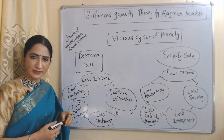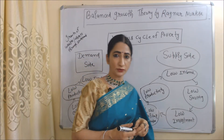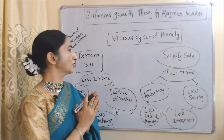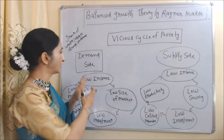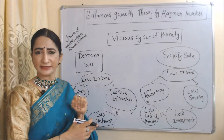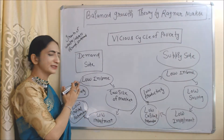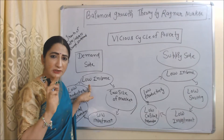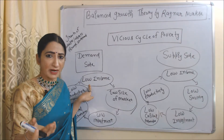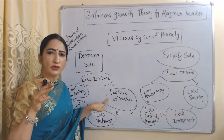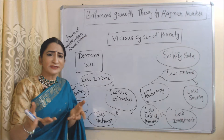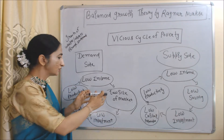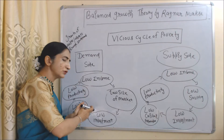According to Nurkse, underdeveloped countries are not able to grow because of the vicious cycle of poverty. The vicious cycle of poverty works at two levels: demand side and supply side. On the demand side, underdeveloped countries have low income, which results in low demand. Low demand leads to a low size of market, and low size of market leads to low investment.